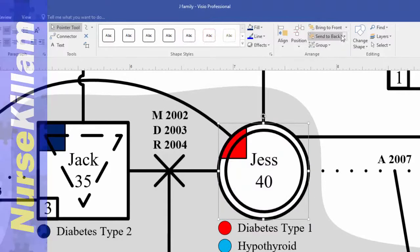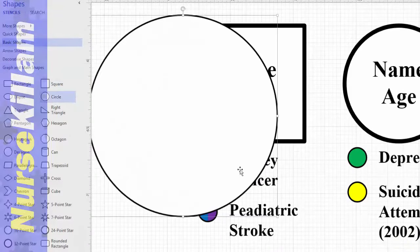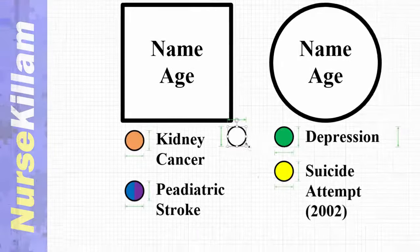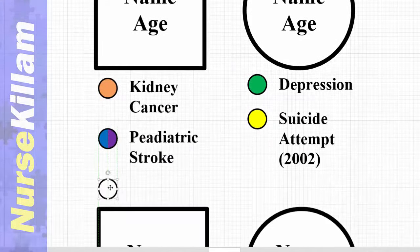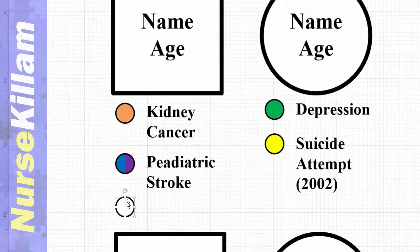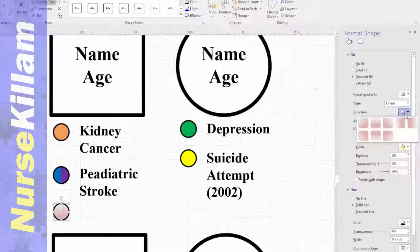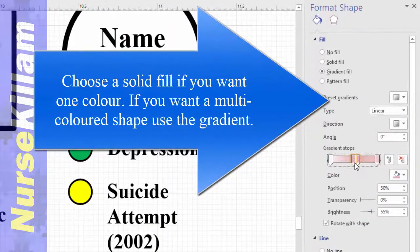Or you can include a color inside a small shape beside the written information below the shape. Again, I recommend using the copy and paste function in order to ensure a consistent format of the circles. To change the fill of the circles, just go into the format shape area.